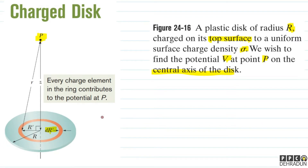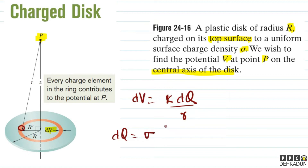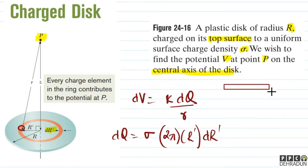For the elemental ring at r', the potential contribution is dV = k·dq / (small r), where small r is the distance from any element on the ring to point P. The area of this ring element is 2πr'·dr' (unrolling the ring gives a rectangle of length 2πr' and thickness dr'). So dq = sigma × 2πr'·dr'.